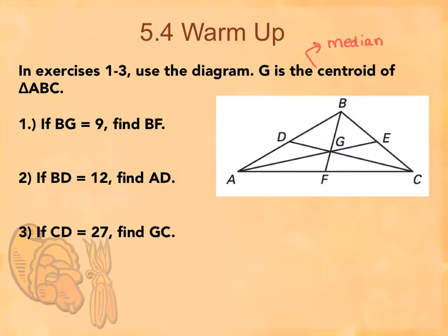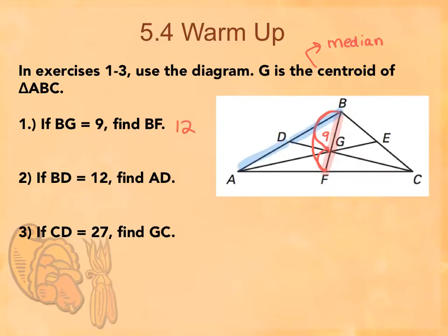So if I look at these: this one says BG, which is on this segment, and BF is what we're given. BG is nine, so BF would be what? Twelve, right? Because this is two-thirds the length, I'd have to add another one-third. That's twelve. Then BD is here. It says find AD. So those are the sides. If it's a median, what's true about those side lengths? They're equal, because it hits it at its midpoint. So if that's twelve, then this is twelve.